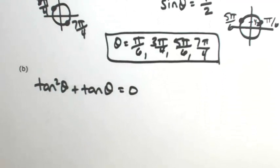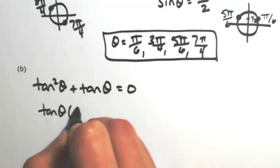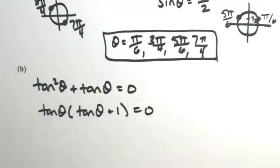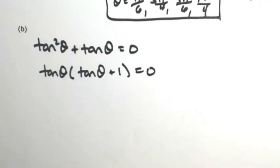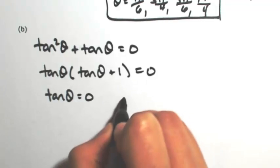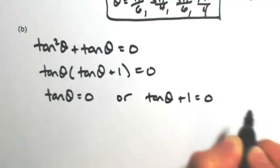So I should probably go ahead and do that. I'm going to factor out the tangent of theta, leaving me with the tangent of theta plus 1. So now that it's factored and set to 0, we can set each factor to 0. So the tangent of theta is 0 or the tangent of theta plus 1 is 0.